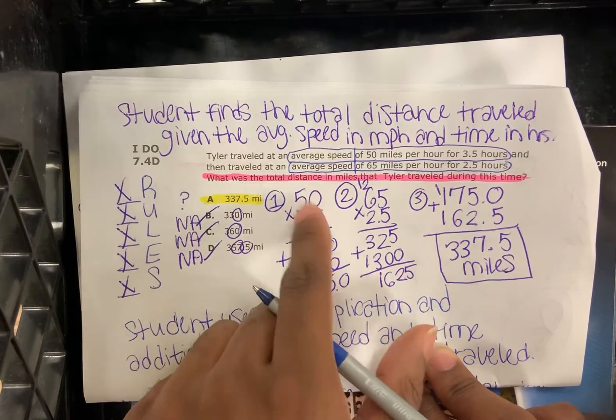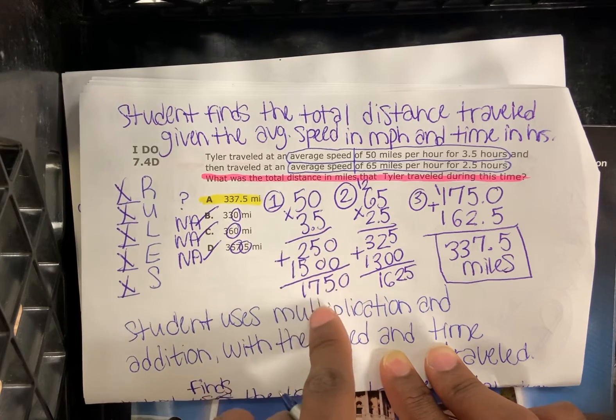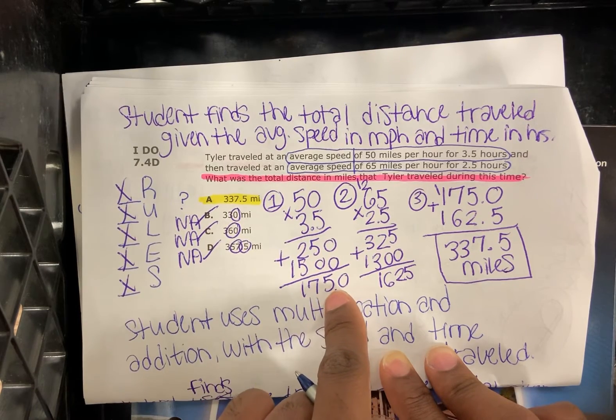Alright, so step 1: 50 multiplied by 3.5, that gives us 175 miles.